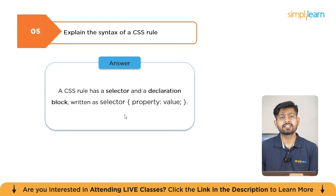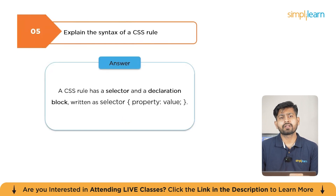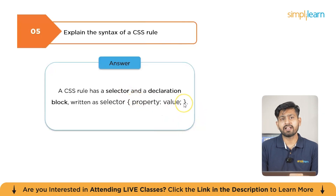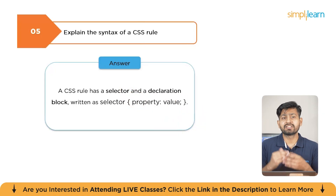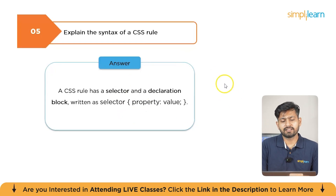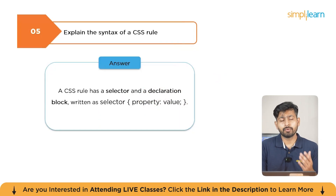The next question is: explain the syntax rule of CSS. The basic CSS rule includes a selector and a declaration block with a property and its value. For example, to style a paragraph, under the p tag you write a property — say "color" — with a value such as "blue".